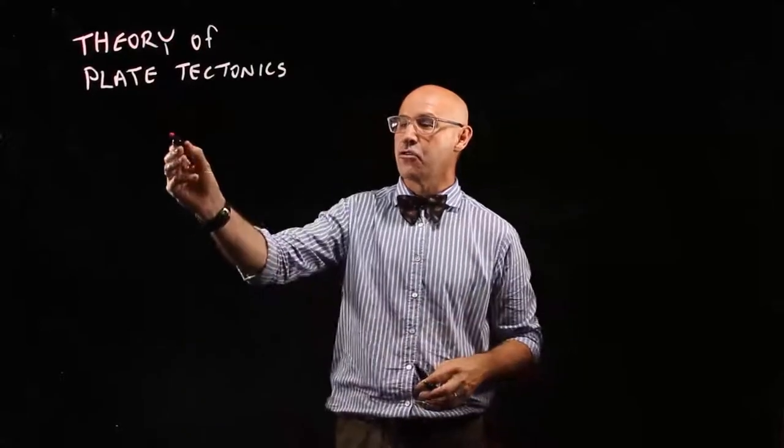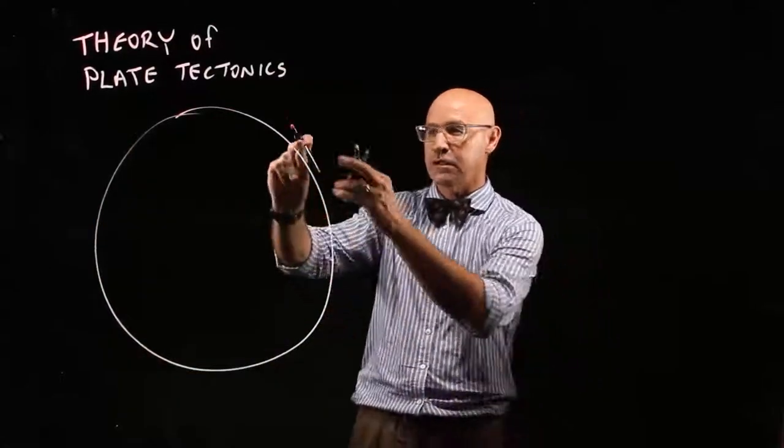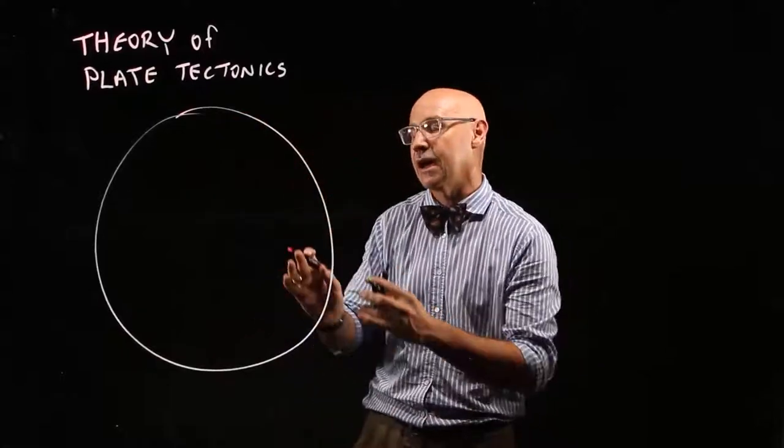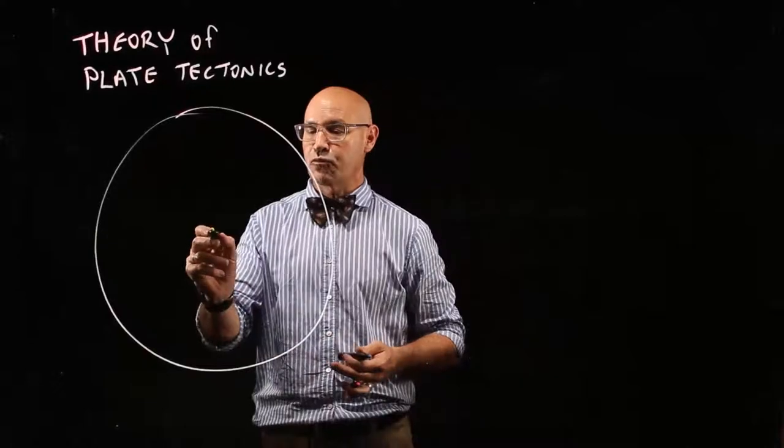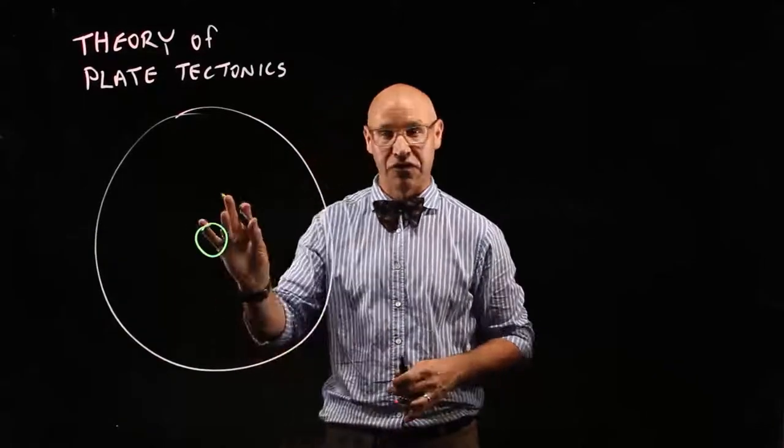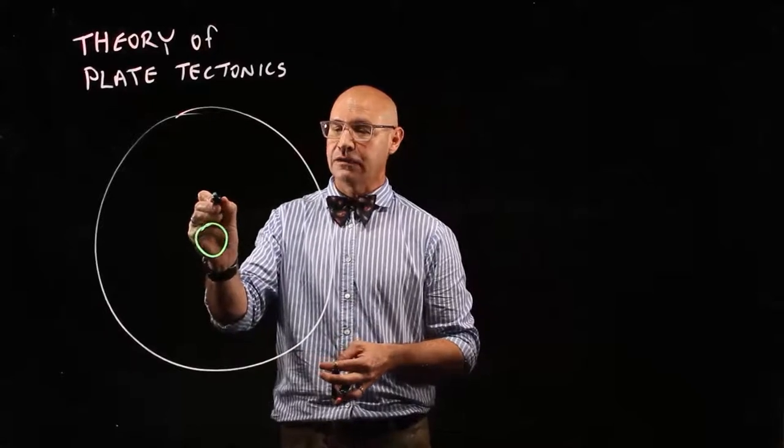And to do that, we need to remember the structure of the Earth. So firstly, we've got our crust, which is a very thin layer compared with the diameter of the Earth. Then we've got this red-hot center, which is solid, the inner core. And then we've got our outer core.